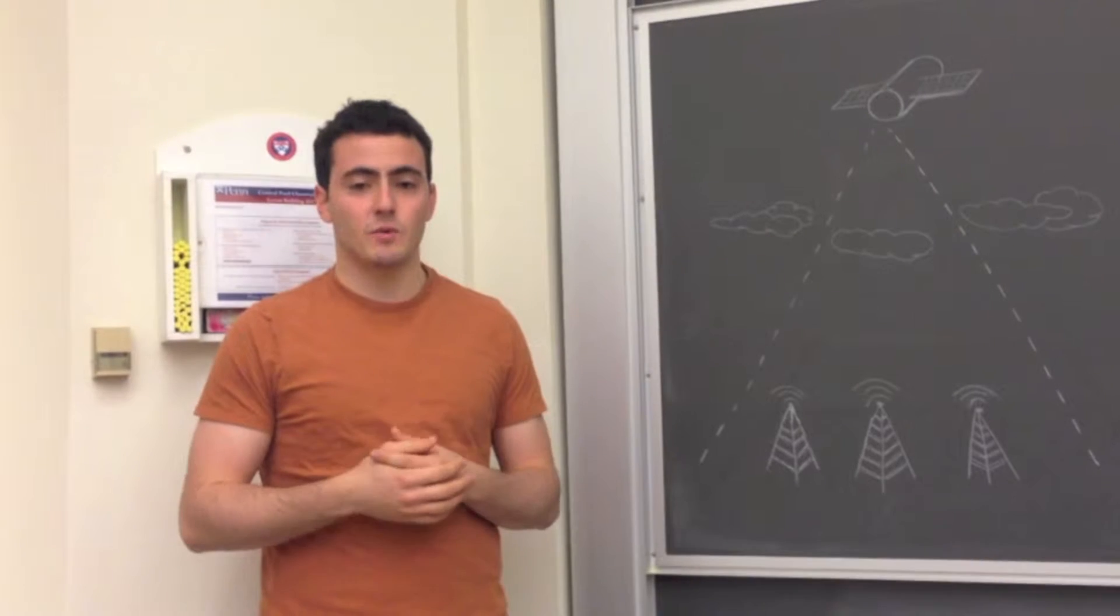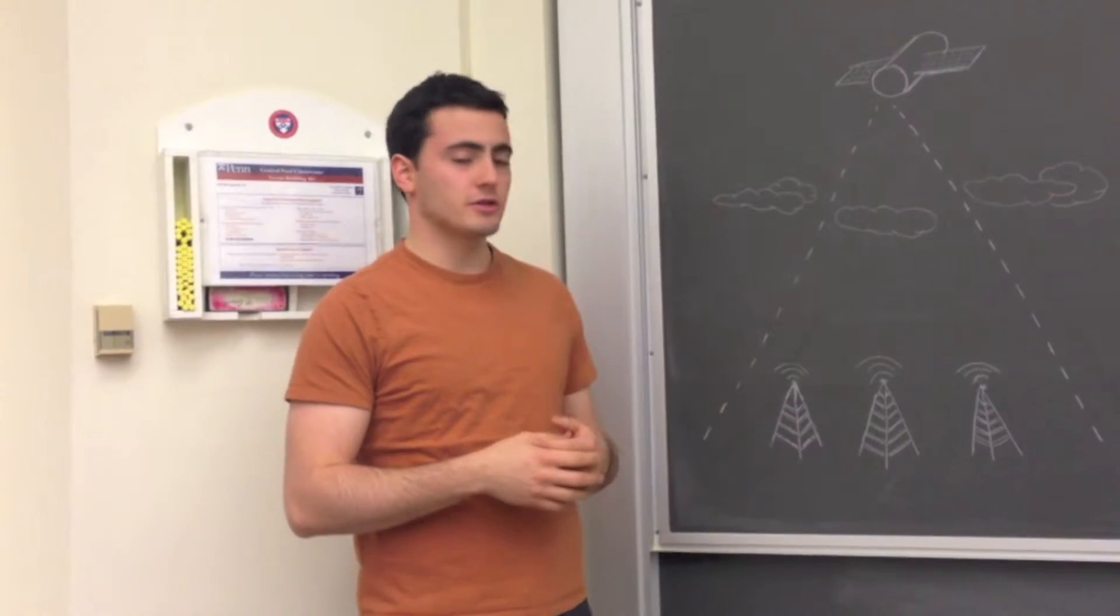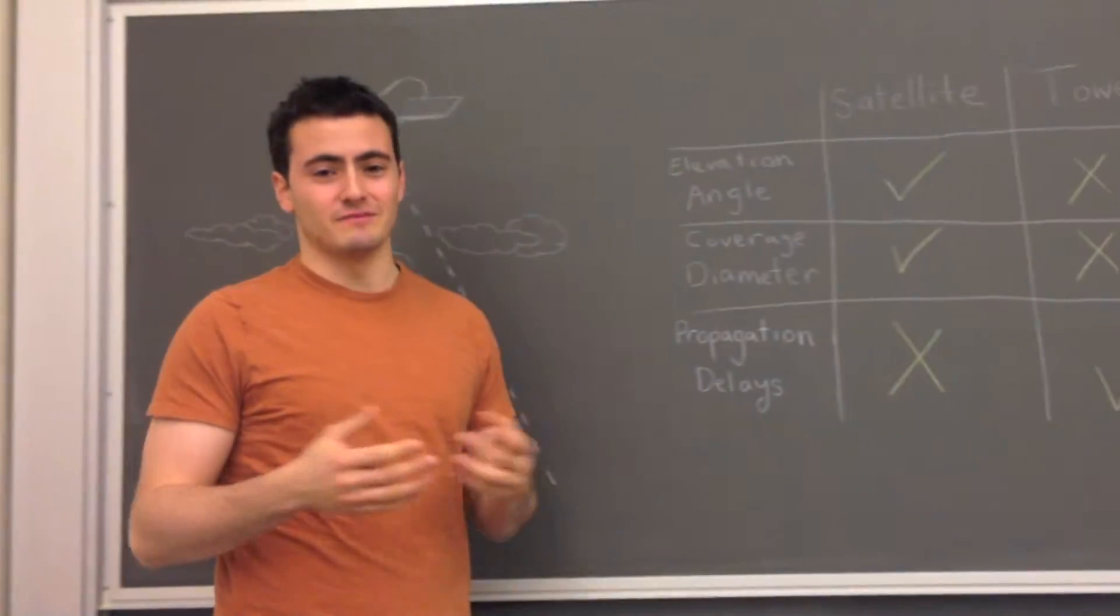So how are we doing this right now, say when we have our cell phones? Well, there are two solutions: terrestrial towers and satellites. They're both alright, they get the job done.